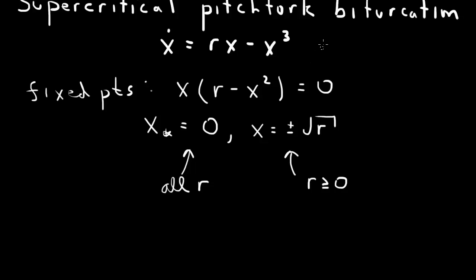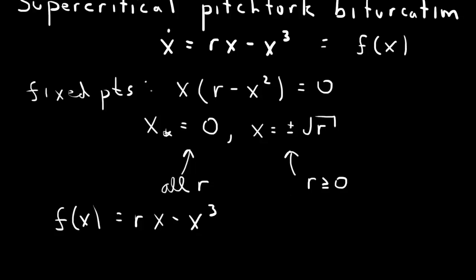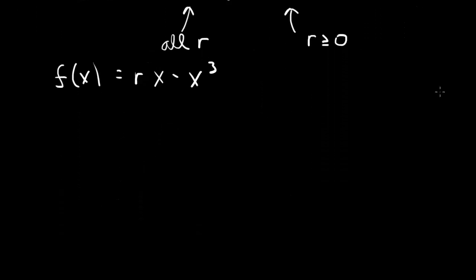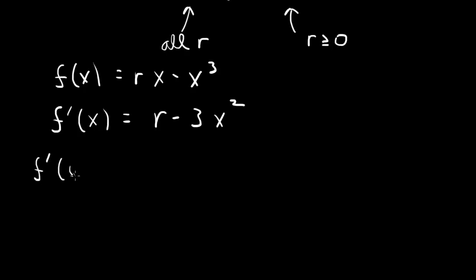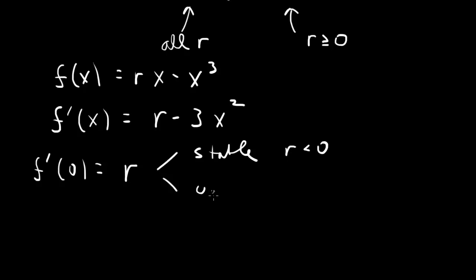What about the stability of the fixed points? We call the right hand side f(x), so f(x) equals rx minus x cubed. To determine stability, we need the derivative: f prime of x equals r minus 3x squared. At x equals 0, f prime equals r. So the origin is stable if r is less than 0 and unstable if r is greater than 0.